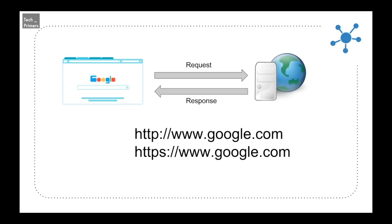Let's say a website is giving five different requests to the web server in order to retrieve five different pieces of information. It is going to create five different connections separately and close those connections once the responses are received. This is how a typical HTTP or HTTPS connection goes. If you take any REST connection it is also the same thing — whenever you are hitting a REST endpoint from your UI or from a different server, it is going to create a separate connection, request the data from the server, and once the response is received the connection gets closed.